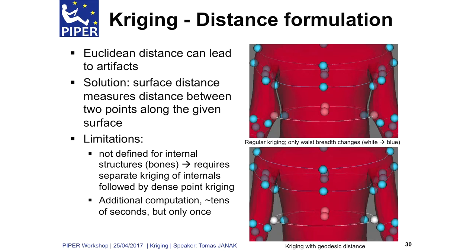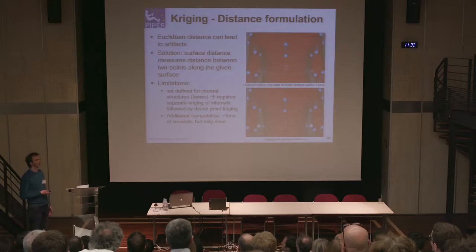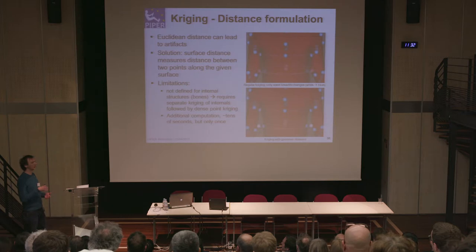Of course, there are some limitations. The biggest is that this distance is defined on the surface, and there isn't really an easy way to extend it to the inner part of the body. So if you want to scale not only the skin but also the skeleton, you usually have to scale the skin using the surface distance, and then use the skin as the target for a second round of kriging. The computation of the surface distance itself takes a few seconds, but it needs to be done only once for a given set of source control points, so it's not a big limitation.